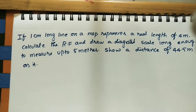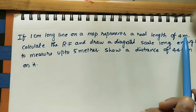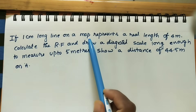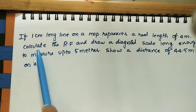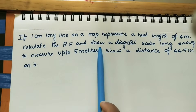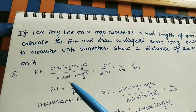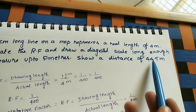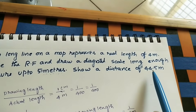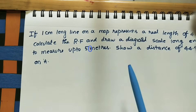Welcome to my channel. Let us discuss how to do the scale for the given data. If one centimeter long line on a map represents a real length of four meters, calculate the RF (representative factor) and draw a diagonal scale long enough to measure up to 50 meters. Also show a distance of 44.5 meters on it. We need to build a diagonal scale.